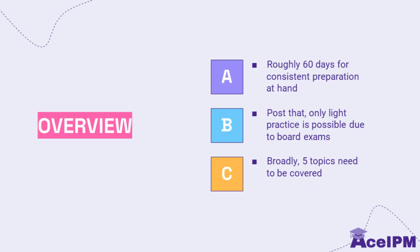Just to give you a brief overview, we roughly have 60 days of consistent preparation at hand because after that you will be emphasizing more on boards, but you still can do some light preparation in that period as well because your preparation should be consistent. Post that, only light practice is possible due to board exams. Broadly, five topics need to be covered, and rather than looking at VA as one big chunk, we can consolidate it into five different sections which are there in the schedule.